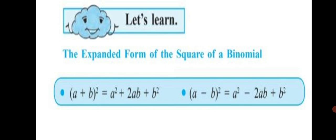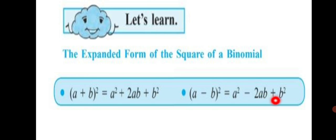The only difference is that the second term will have a subtraction sign when expanding the square of a binomial in subtraction. In addition, all signs remain plus. In subtraction, the second term carries a minus sign and the third term carries a plus sign. The expansion structure is the same: a² ± 2ab + b².